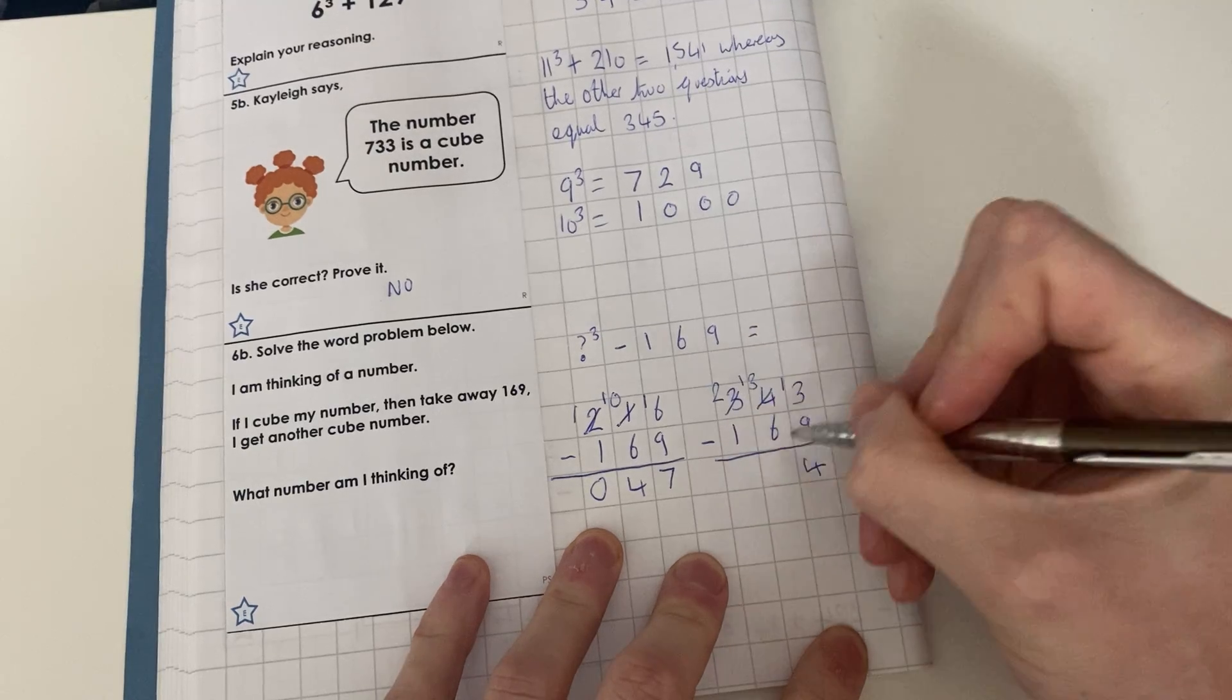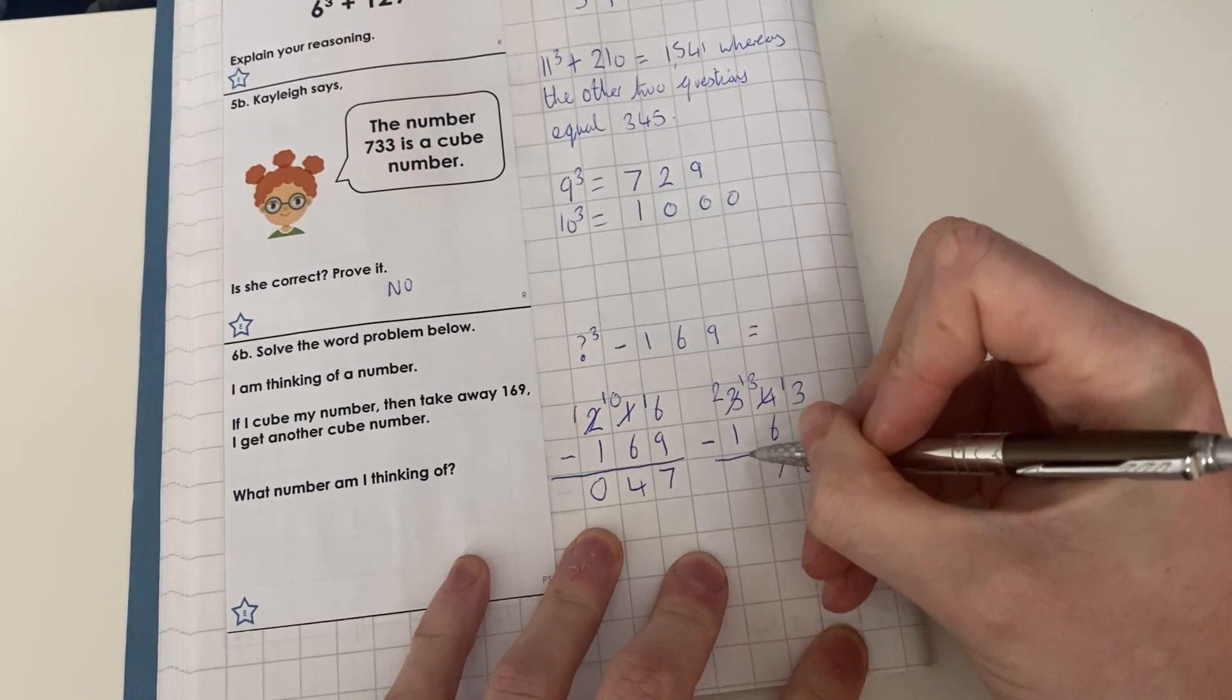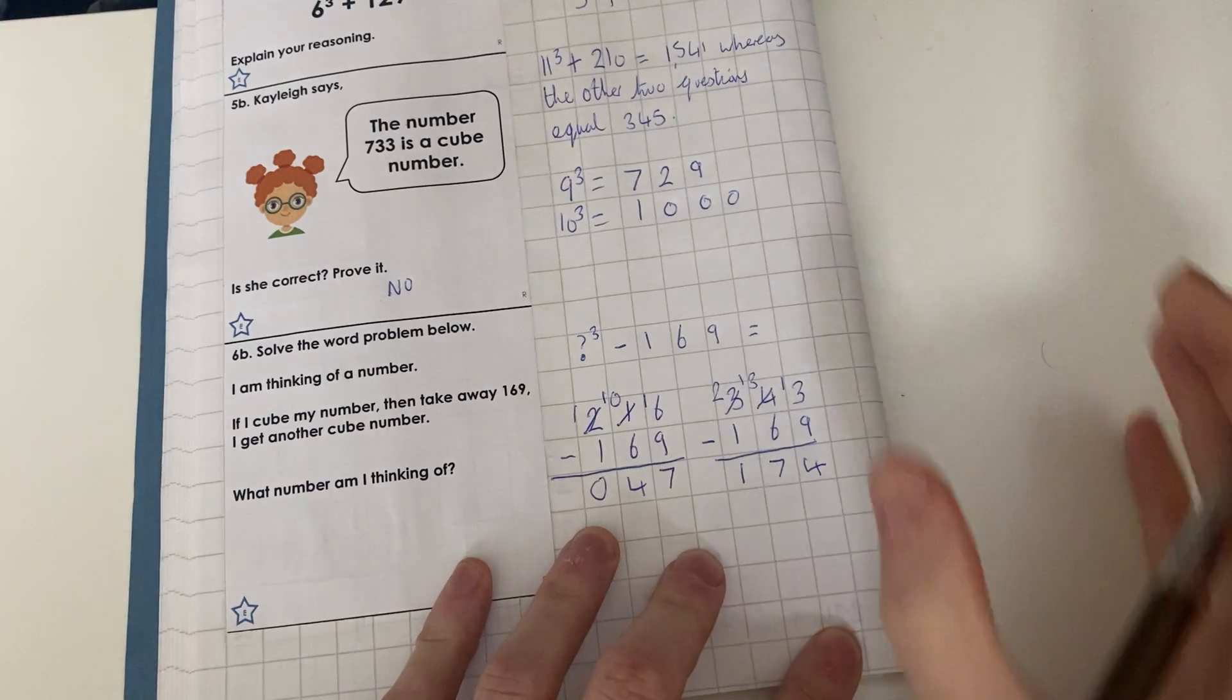13 - 6 = 7, 2 - 1 = 1. So we get 174. If you look at your answers on your sheet that you've got, you'll be able to tell me that 174 is not a cube number, so this cannot be 7.